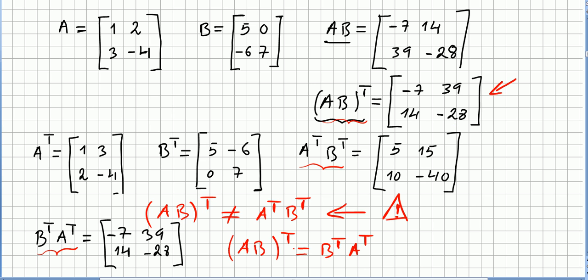So we can observe that AB transpose, so AB transpose is not A transpose B transpose, but AB transpose is B transpose times A transpose. So it's the product in the inverse order.